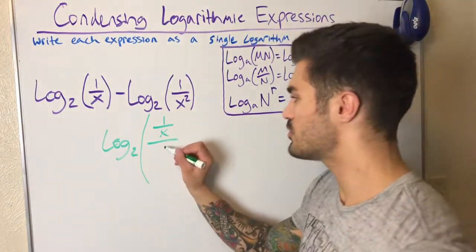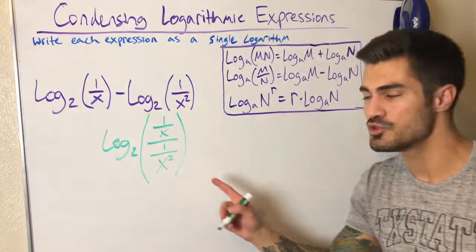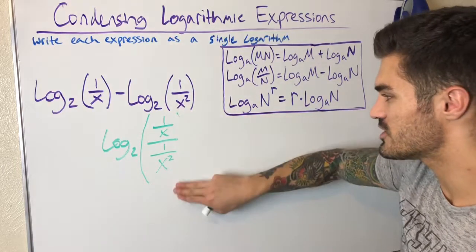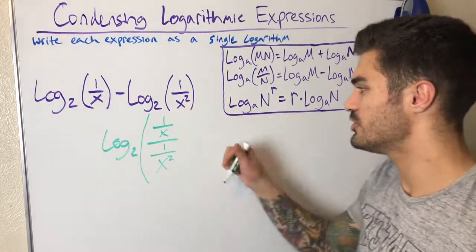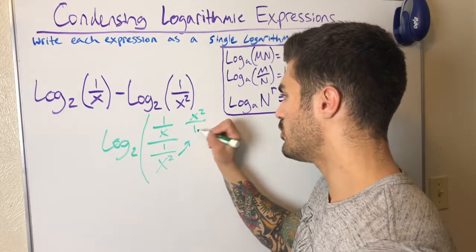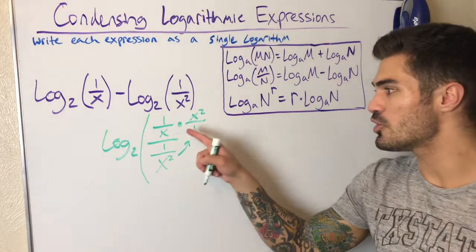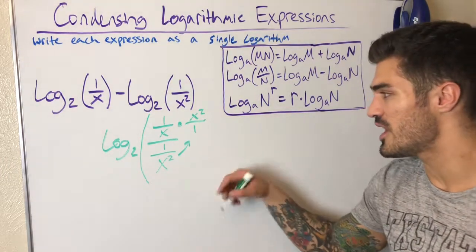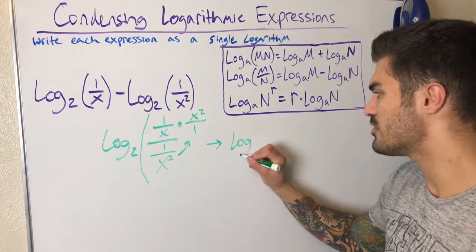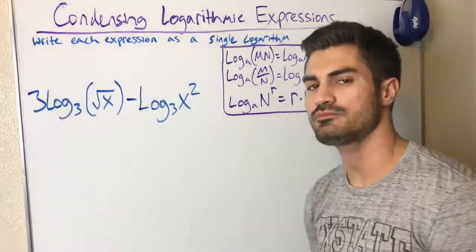This is going to be a fraction over a fraction: 1 over x on top, over 1 over x squared. So how do I divide two fractions? I flip and multiply — that's how I multiply fractions — so I get x squared over x, which is actually just equal to x. My final simplified logarithm is log base 2 of x.